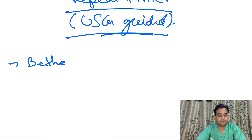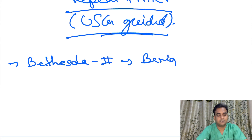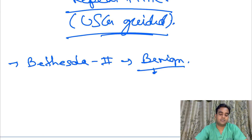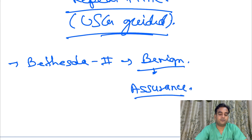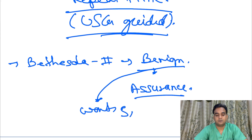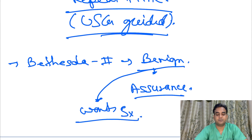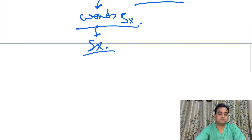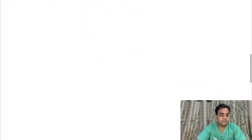Bethesda 2 is a benign lesion. In this, you can either give assurance to the patient, or if the patient wants surgery for cosmetic purposes, then you can go ahead and do the surgery.